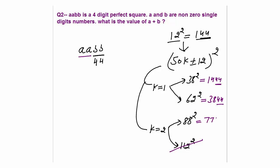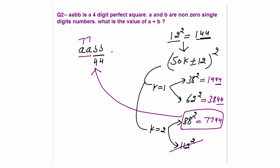With k=2: 88 squared. Calculating 88² = 7744 — the last two digits are 44 and the first two digits are 77. This matches the pattern aabb! So the number is 7744, meaning a=7 and b=4. Therefore a + b = 7 + 4 = 11.